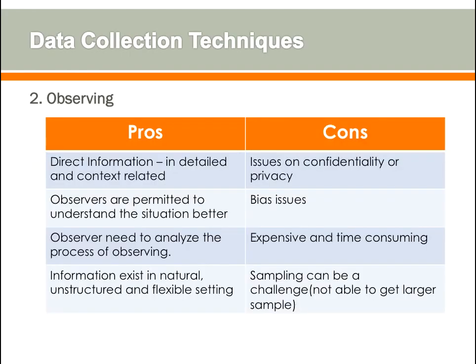Observation has its pros and cons. The pros are that direct, detailed, and context-related information can be gathered; observers gain a better understanding of the situation; and information exists in natural, unstructured, and flexible settings. The cons include issues of confidentiality and privacy, potential infringement of privacy, possible observer bias, and it can be expensive and time-consuming. Sample size can also be a challenge, as it may be difficult to obtain a larger sample.